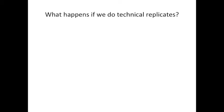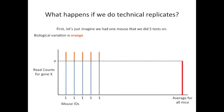At long last, we're going to see what happens when we do technical replicates. First, let's just imagine that we had one mouse that we did five tests on. Just like before, we're going to indicate biological variation with an orange color. And just like before, technical variation will be indicated with green arrows pointing up or down depending on which way the technical variation influenced the read count.